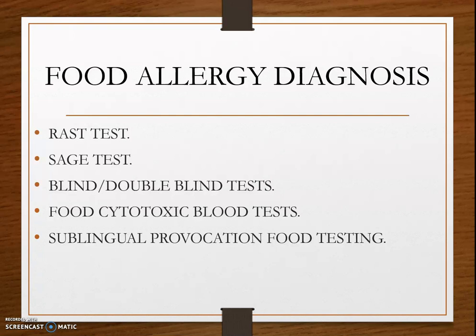The RAST test — RadioAllergoSorbent Testing — detects allergen-specific IgE in the blood. The sage test is a particular test to determine if you are allergic to sage. It is also known as the salvia allergic test, used to detect if you are allergic to sage.